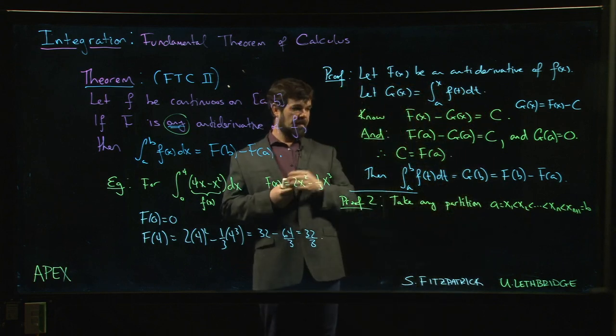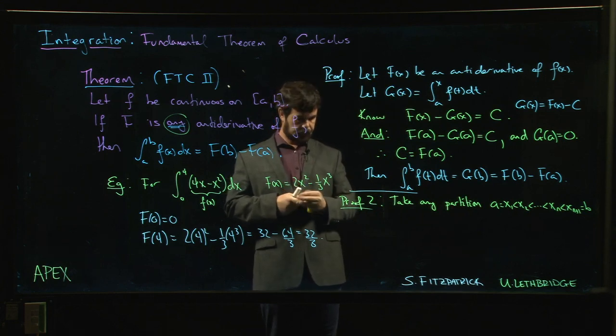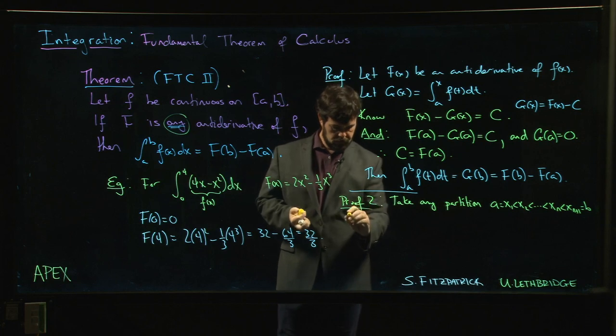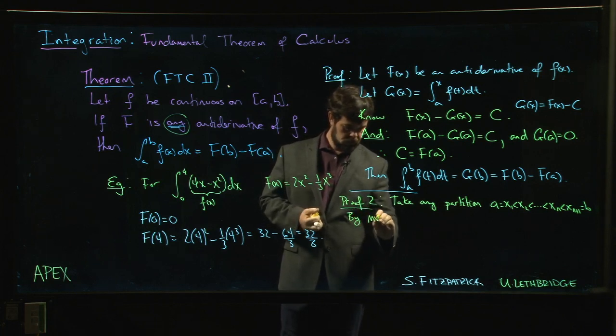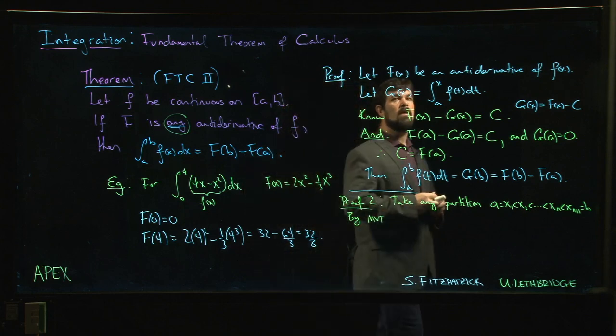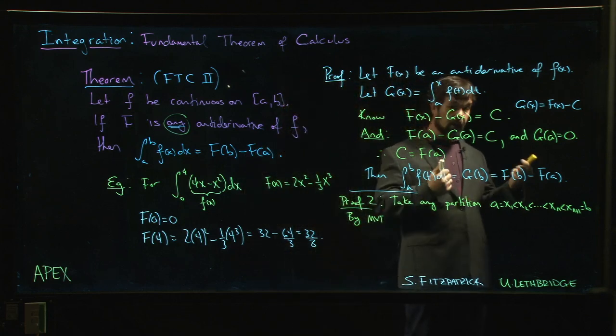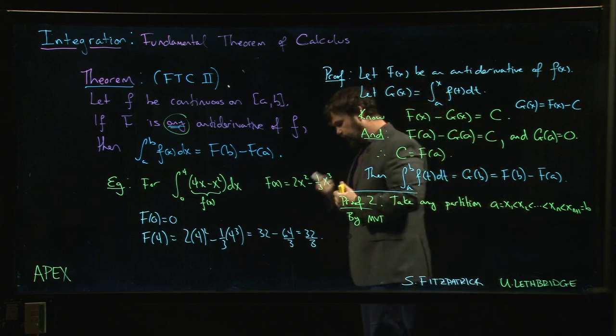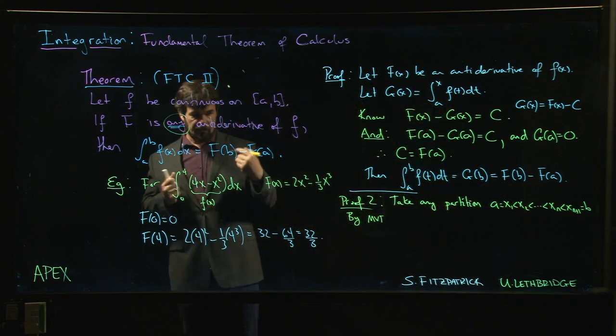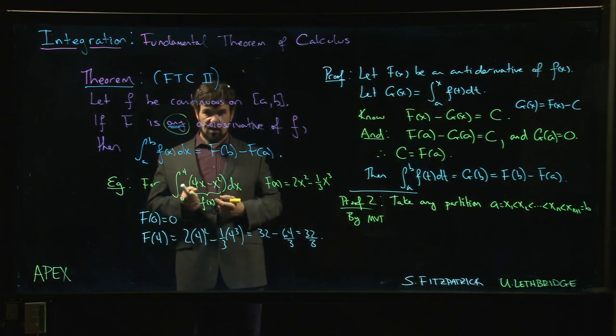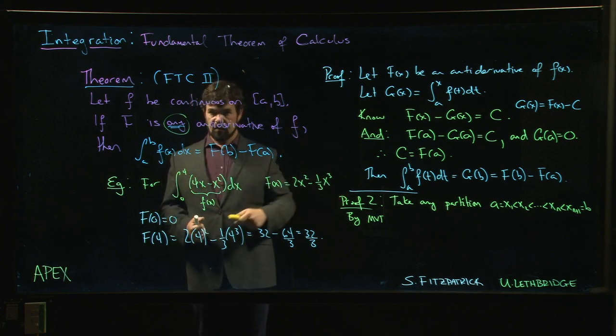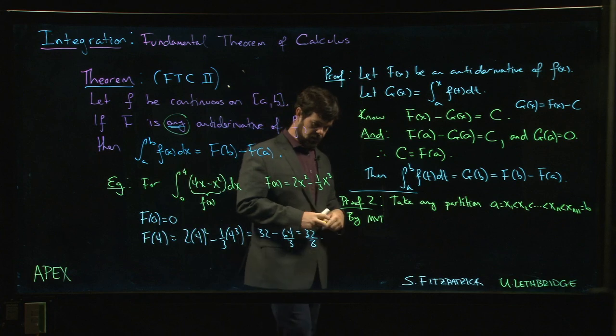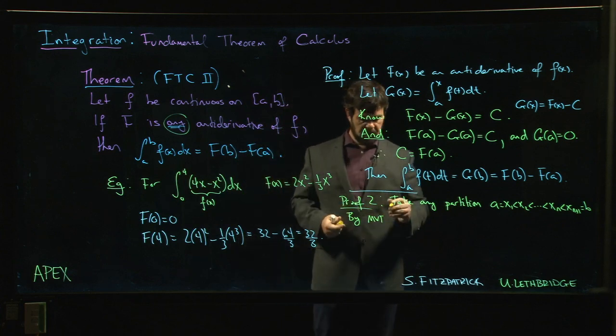We take our f, so we've got our f(x). Now if big F is an antiderivative of little f, it's differentiable, right? And if it's differentiable, it's continuous. If we have a function which is both differentiable and continuous, the mean value theorem applies to it. So by the mean value theorem...